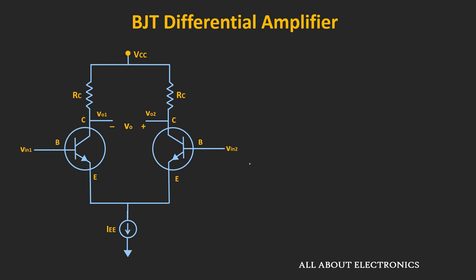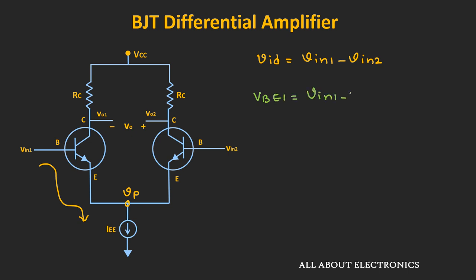Here Vin1 and Vin2 are the two inputs of this differential amplifier. The differential input Vid is equal to Vin1 minus Vin2. Let's say the voltage at this node is equal to Vp. If we apply KVL around transistor Q1, then Vbe1 is equal to Vin1 minus Vp. Similarly, around Q2, Vbe2 is equal to Vin2 minus Vp.